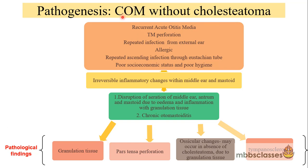The pathological findings in chronic otitis media without cholesteatoma include granulation tissue in the middle ear cleft and perforation of the pars tensa part of the tympanic membrane. The perforation becomes permanent when the margins get epithelized. Due to granulation tissue, in some cases we may get ossicular changes — especially the long process of incus is at risk of avascular necrosis. In these cases, ossicular damage is due to the granulation tissue.